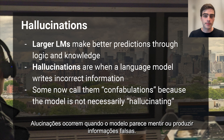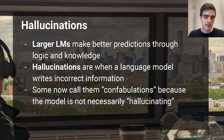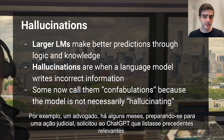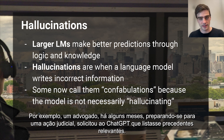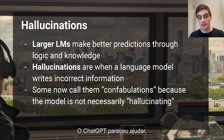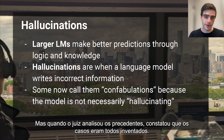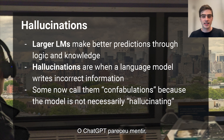Hallucinations are when the model appears to lie or produce false information. Examples of hallucinations have appeared in the news. For example, a lawyer a few months ago preparing for a lawsuit asked ChatGPT for relevant precedents. ChatGPT appeared to comply — it produced a list of valid cases. But when the judge reviewed the precedents, the judge found that the cases were all made up. ChatGPT had lied.